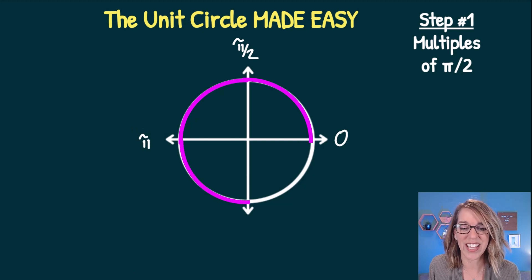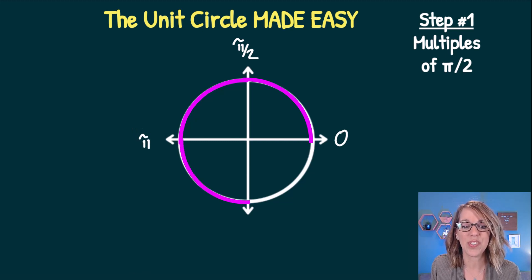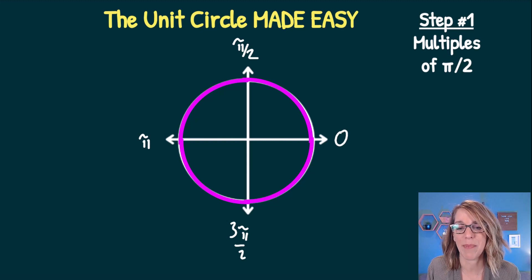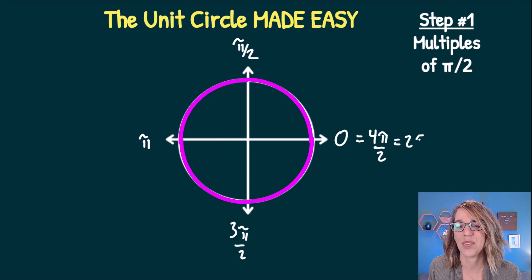Continuing around, the next position is 3 pi-halves. Traveling again and counting off by pi-halves gives me 4 pi-halves, also known as 2 pi.